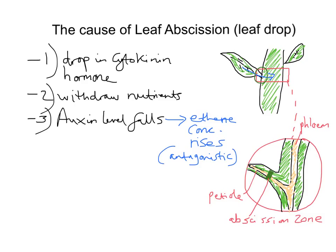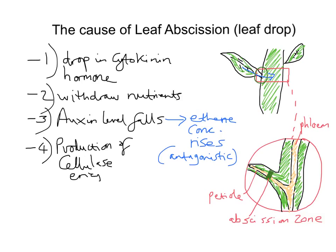Water and nutrients move out of the leaf. To recap: high levels of ethene stimulate the production of cellulase enzymes. When those enzymes are produced in the abscission zone of the petiole, we get digestion of that petiole and the leaf drops. That digestion happens right there in the abscission zone.